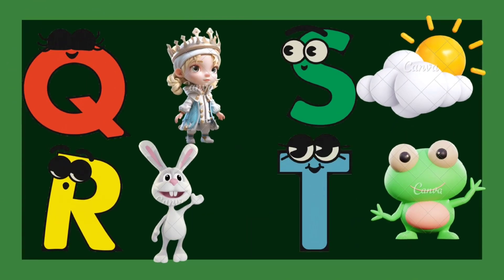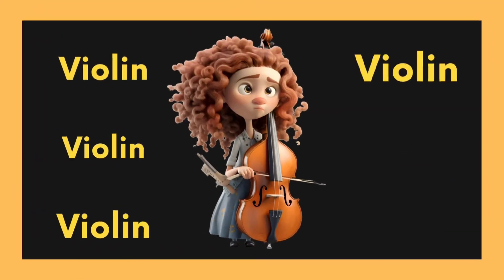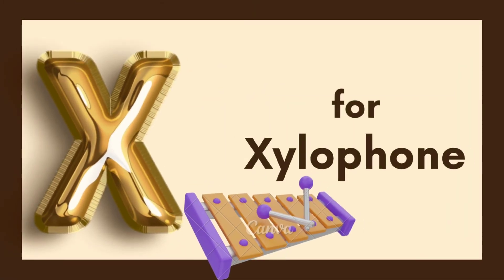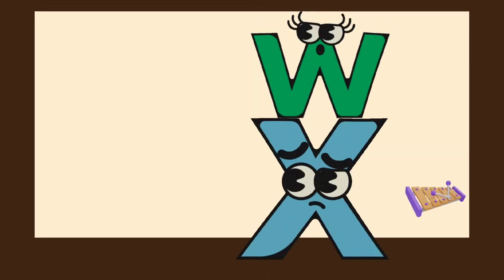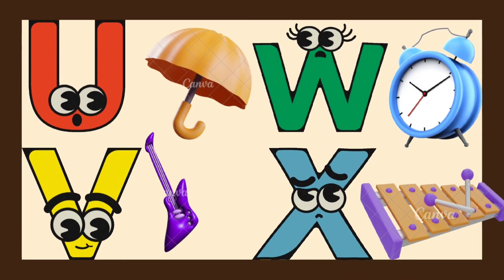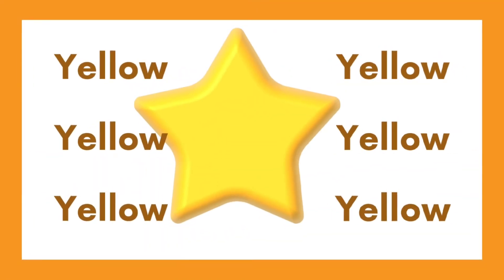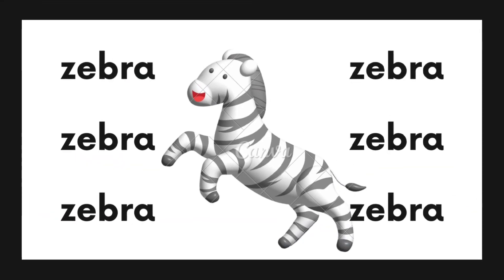U is for Umbrella, U-U-Umbrella. V is for Violin, V-V-Violin. W is for Watch, W-W-Watch. X is for Xylophone, X-X-Xylophone. Y is for Yellow, Y-Y-Yellow. Z is for Zebra, Z-Z-Zebra.